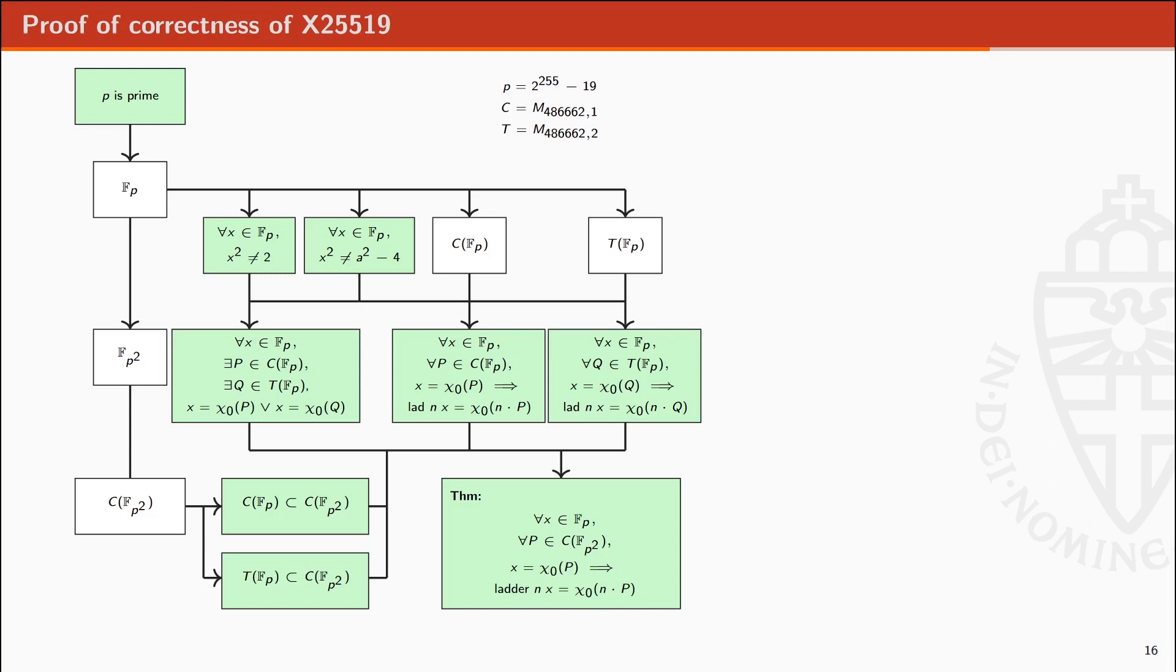For all points in Fp square with the X coordinate in Fp, the Montgomery ladder will compute the X coordinate of n times P.